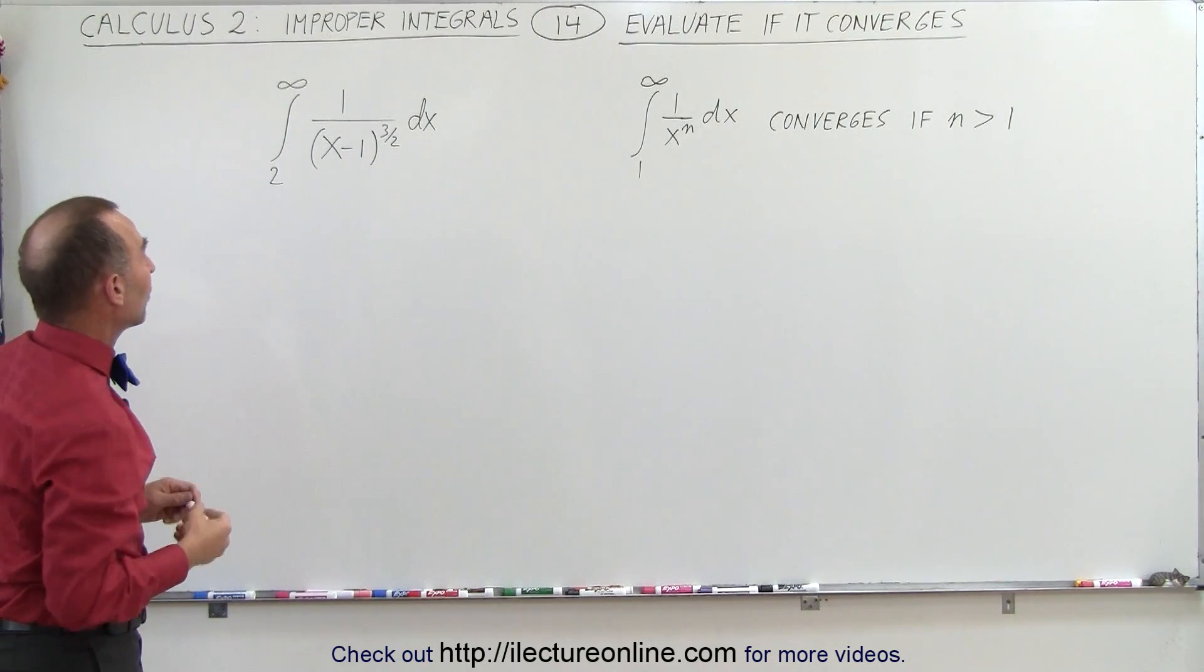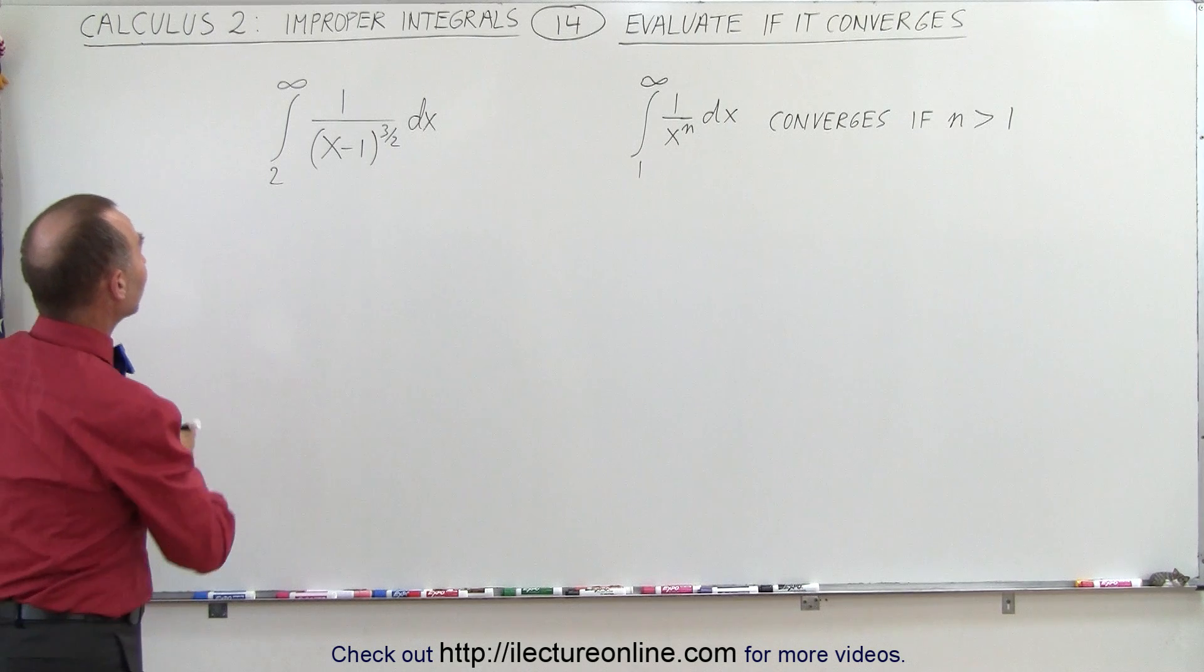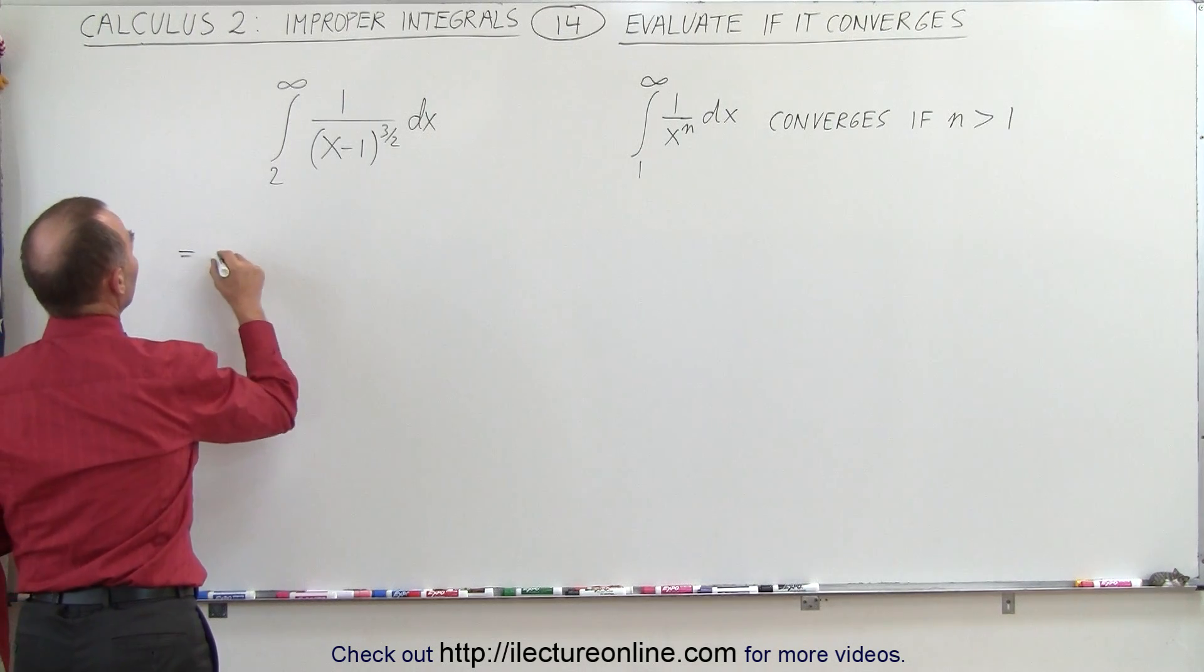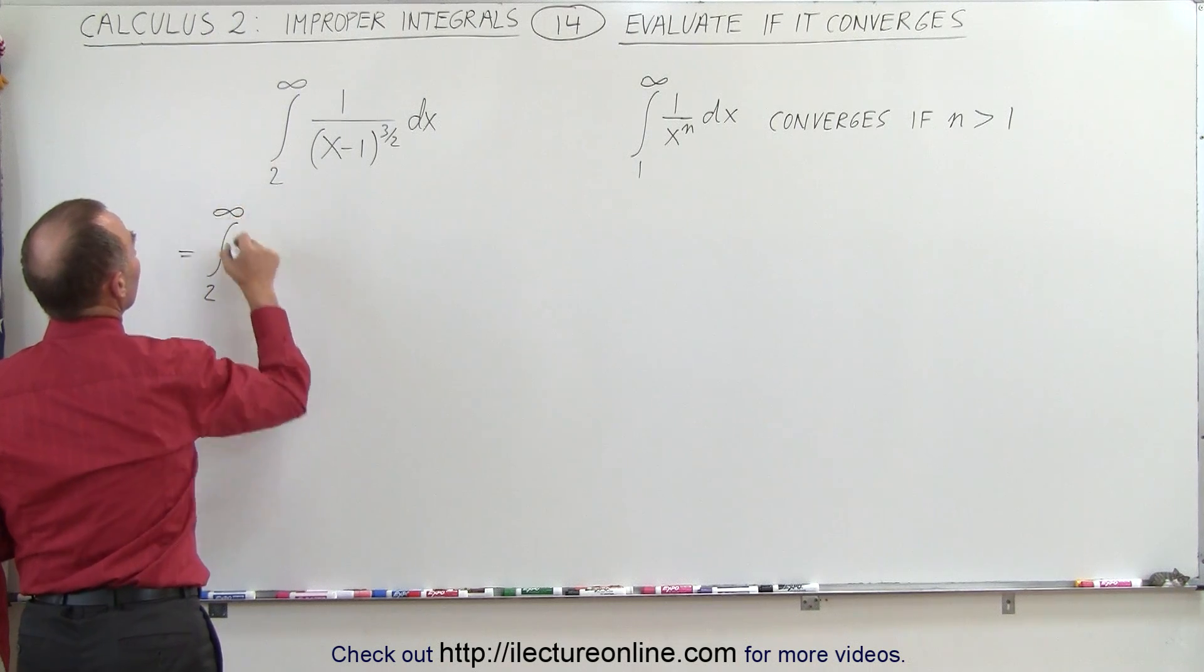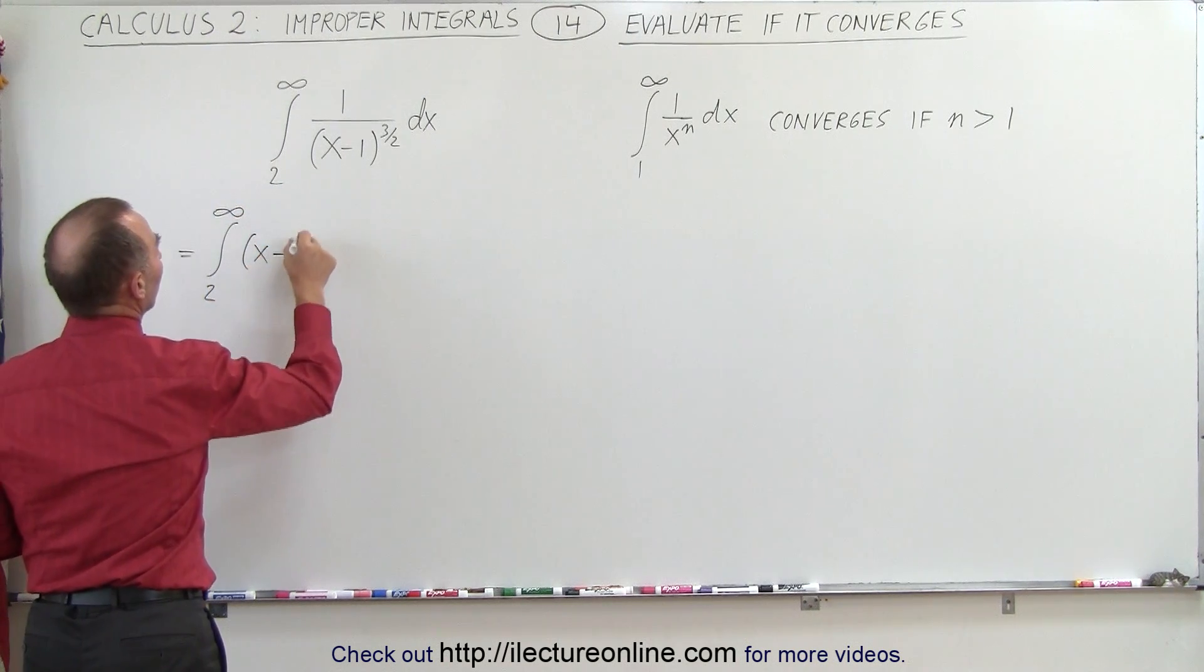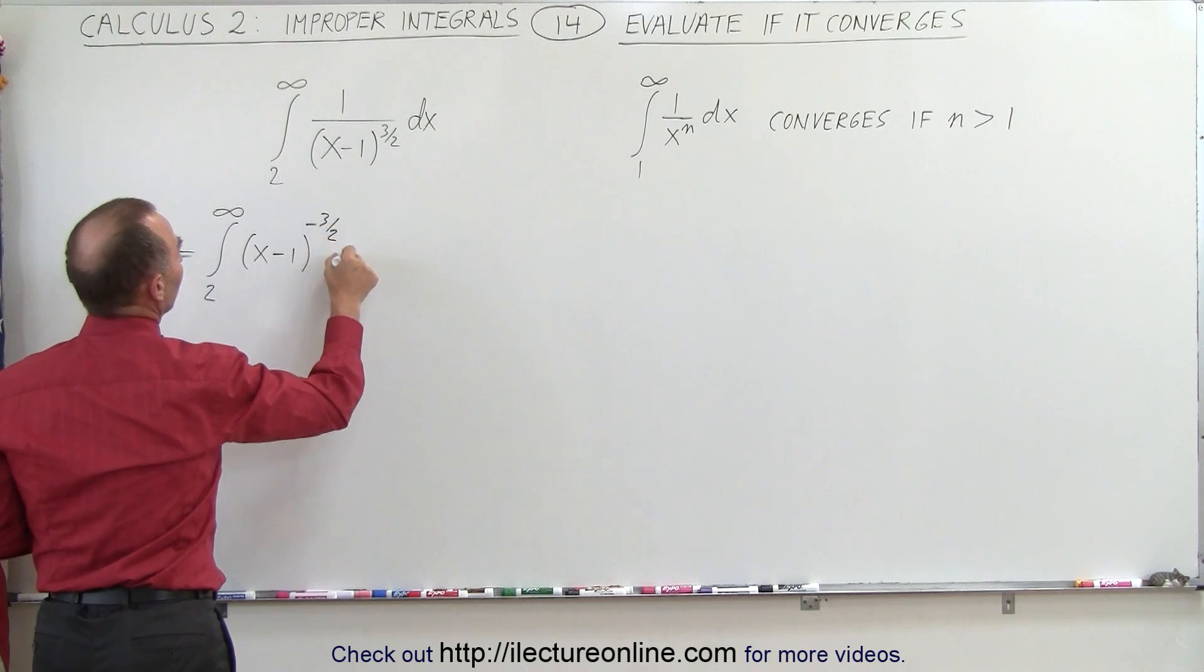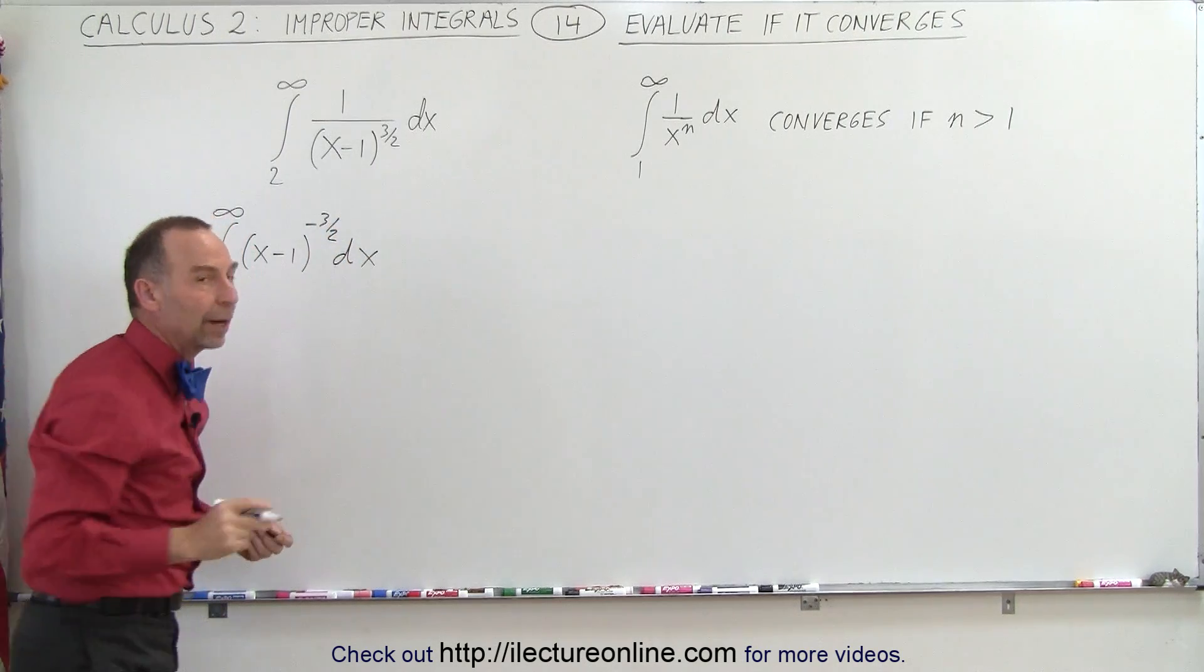So then we simply have to evaluate it. I'm going to rewrite this function. We can say this is equal to the integral from 2 to infinity of the quantity x minus 1 to the minus 3 halves power dx. That makes it easier to integrate.